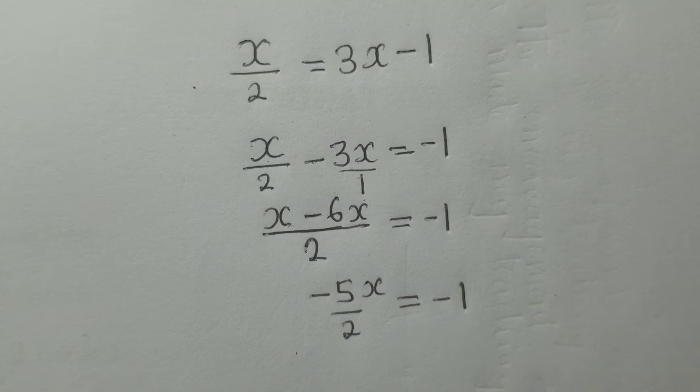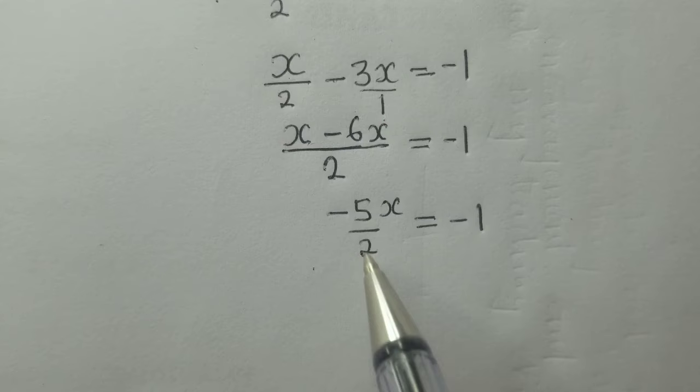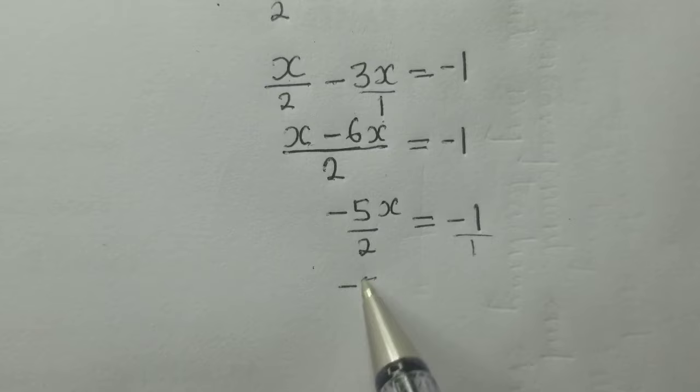To solve for x, we can cross multiply. There is a 1 here, and 1 times -5x equals -5x, which equals 2 times -1, giving us -2.